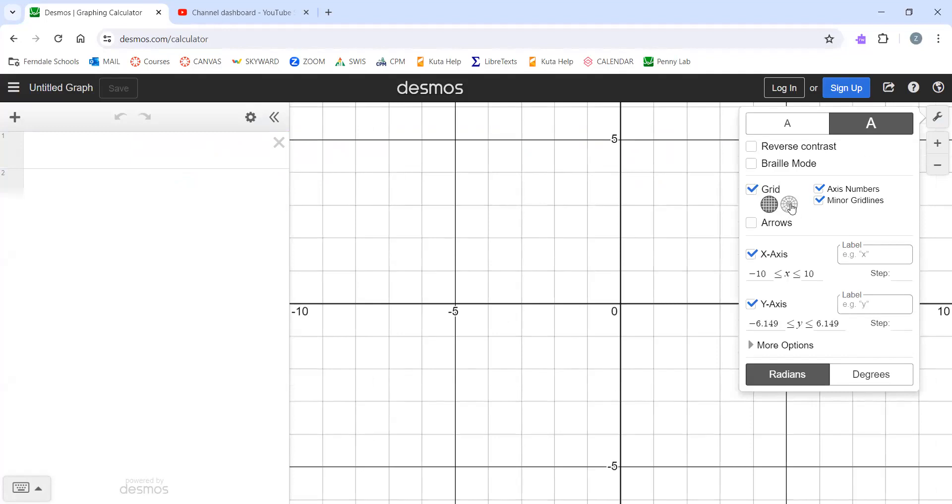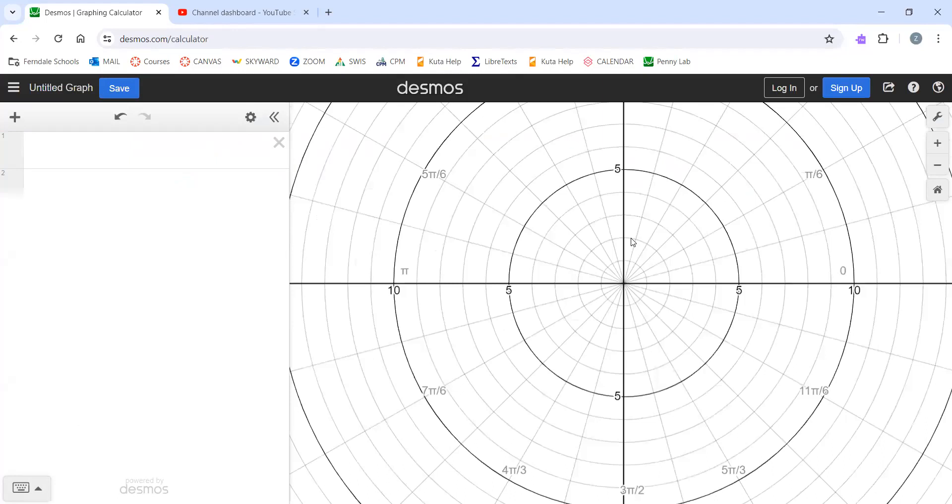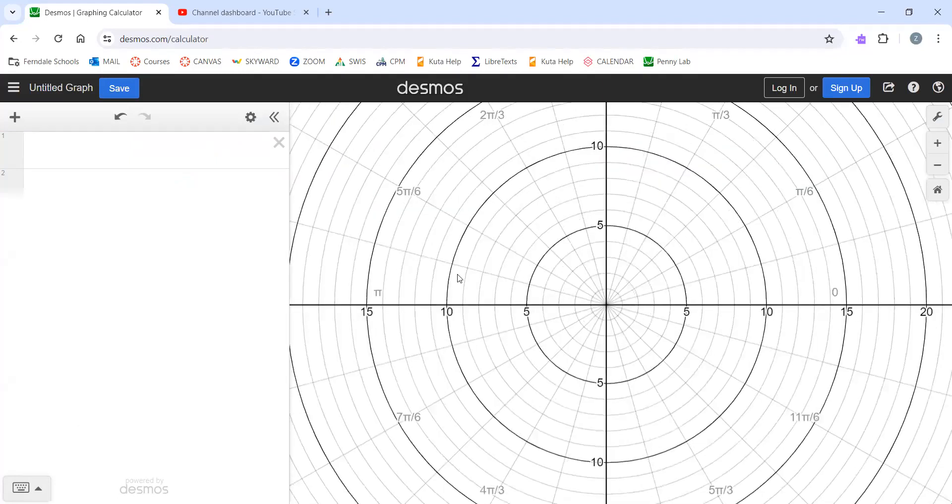We're going to change our grid to a polar grid. I'm turning off my axis numbers, but before I do, I'm going to use my mouse wheel to scroll out. We want to be able to see out to about 10 or so.